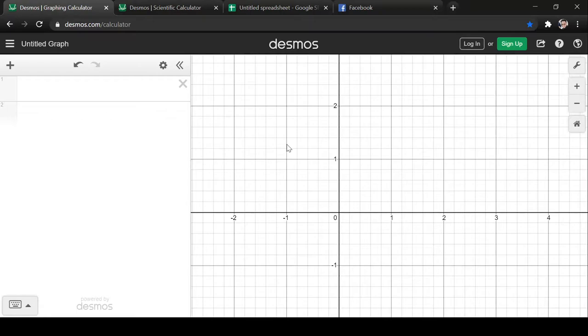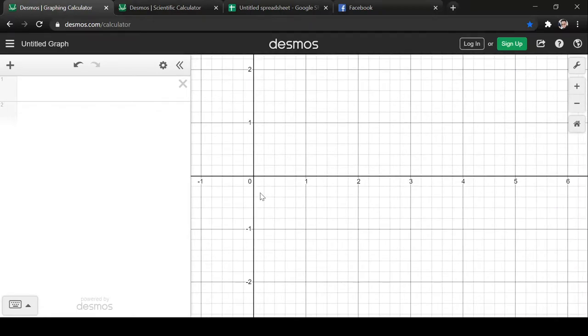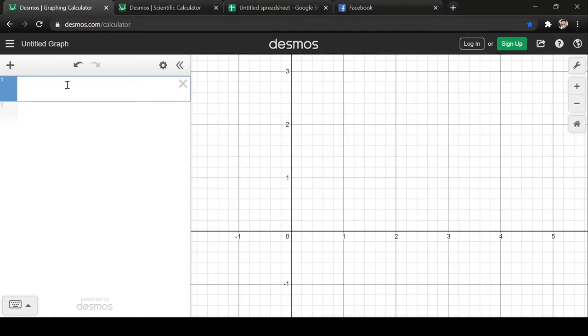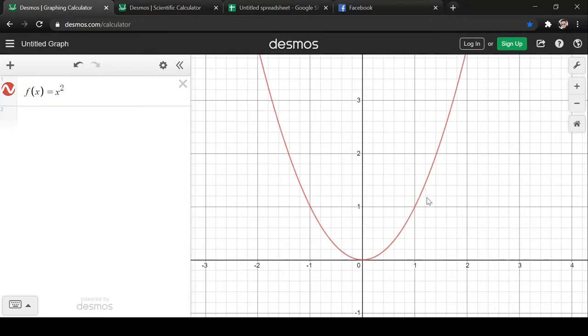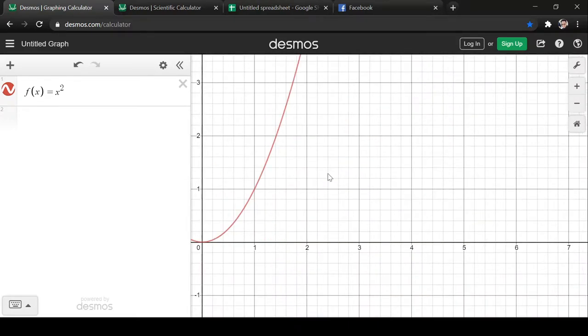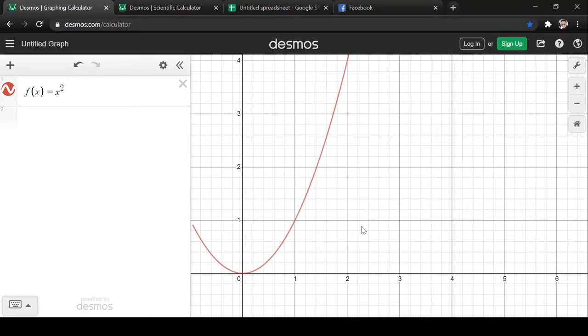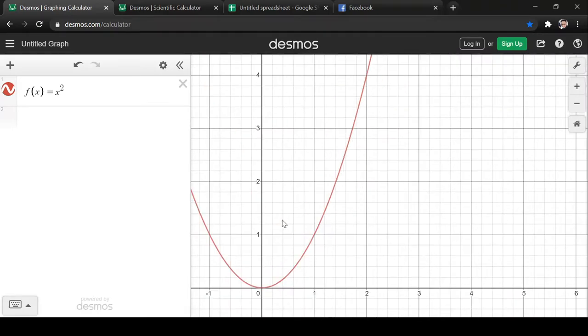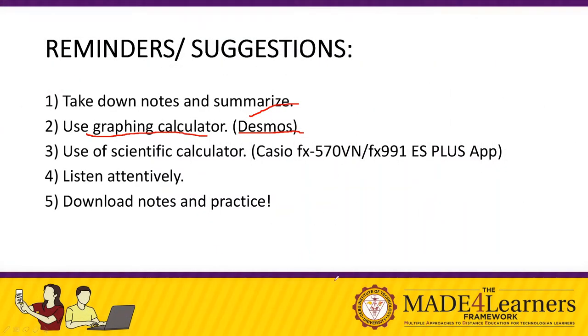This is very important to us because we're dealing with functions. If we have a function, let's say f(x) equals x squared, it's very easy for us to see the graph of the function and understand the importance or the concept of limit in relation to this function.